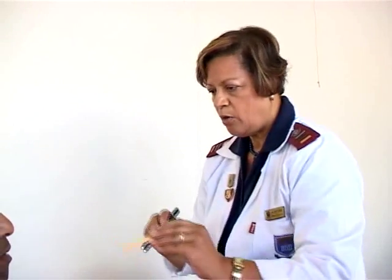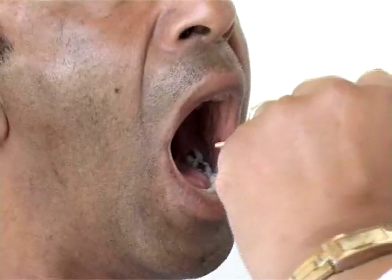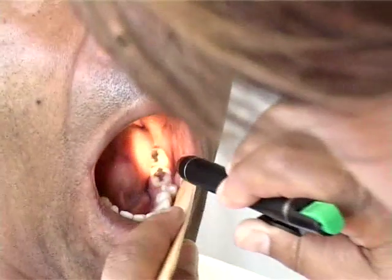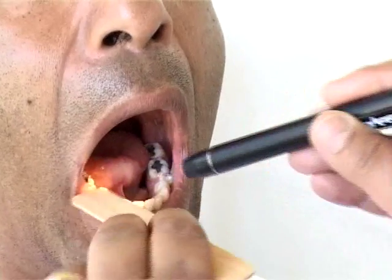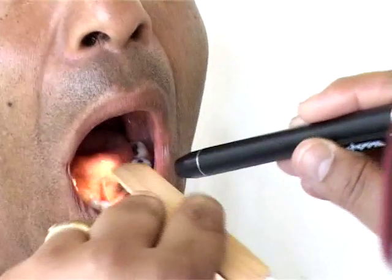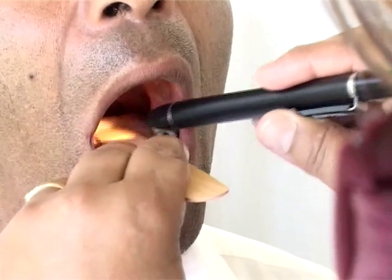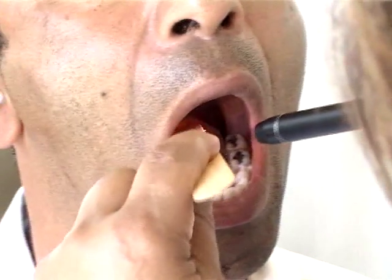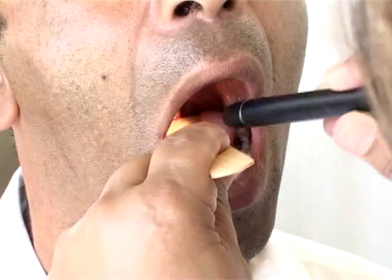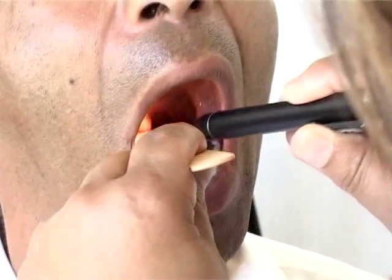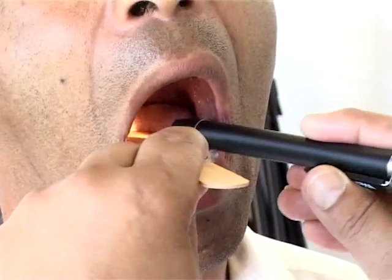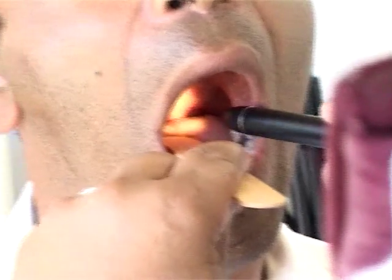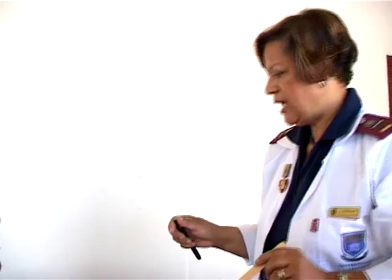We open the mouth and look at the buccal mucosa to see if there are any abnormalities. We look at the teeth and the gums. We look at the dorsum of the tongue and the underside of the tongue. We also look at the throat — the tonsillar pillars and tonsils — including the hard palate and soft palate, and especially the uvula, to check for any abnormalities.